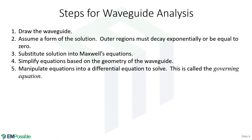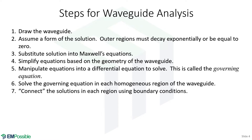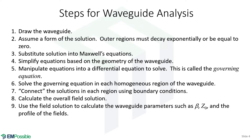Pretty much no matter what we do, we're always manipulating Maxwell's equations, simplifying where we can, and collecting everything into a single differential equation — the governing equation. We solve the governing equation, and if we have an inhomogeneous waveguide solving by hand, we solve each homogeneous region separately and connect them using boundary conditions. Once we have the overall field solution, we can extract waveguide parameters such as the phase constant, characteristic impedance, field pictures, and cutoff frequencies. That's the general procedure we will follow.